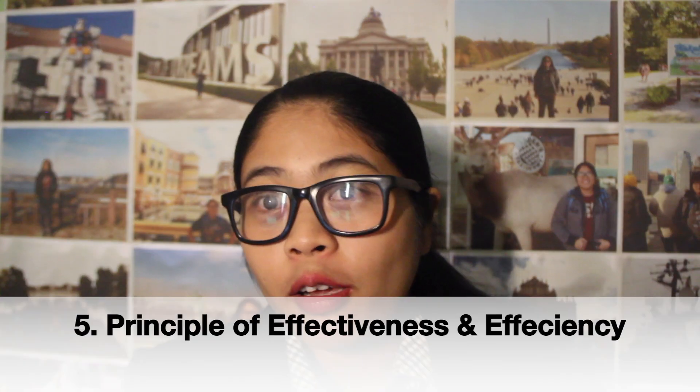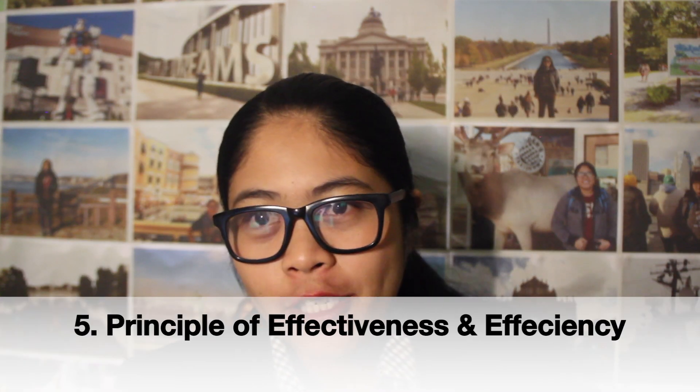The next environmental management principle is the Principle of Effectiveness and Efficiency. The efficiency of resource use may be accomplished through policies that create incentives to minimize wasteful uses. This principle is also applied in environmental governance by highlighting processes and procedures in order to minimize environmental costs.